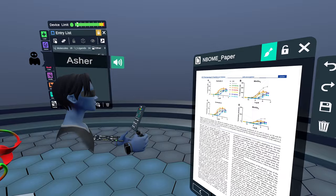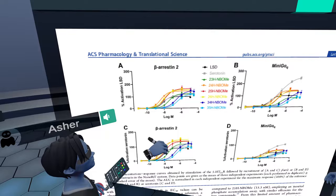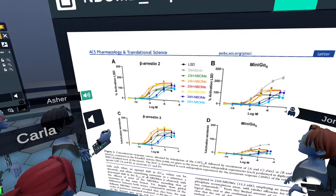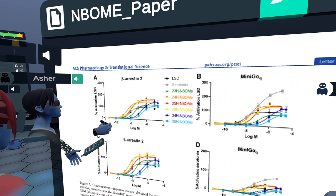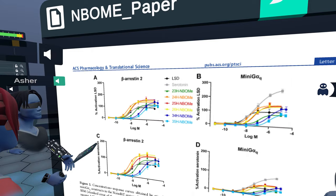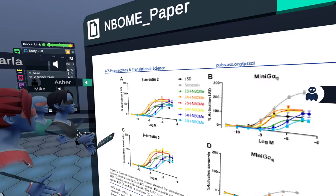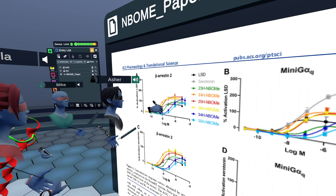Let's look at the graphs. This is the beta-arrestin recruitment and the mini-GAQs, the G-protein. If you look at the beta-arrestin, the ones with the highest efficacy of the NBOM compounds and potency are 2-5 in red, then we've got 2-4 in orange, and then 2-6. Basically it leads you to realize that anything with a 2 position produces higher efficacy and potency.